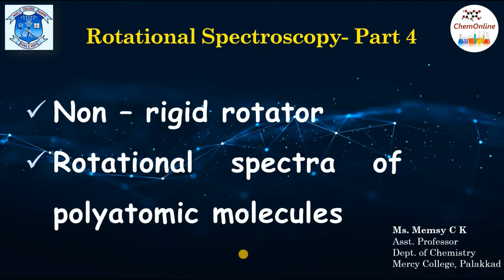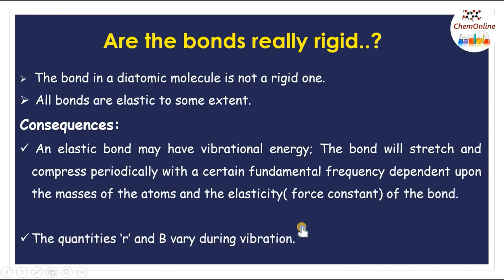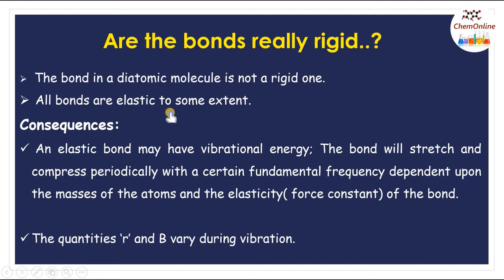In this class, we will discuss the non-rigid rotator model and the rotational spectra of polyatomic molecules. While solving the Schrödinger wave equation for a rotating diatomic molecule and deriving the energy, we had assumed that a rotating molecule is a rigid rotator — that is, the bond length is fixed. But in reality, the bonds in a diatomic molecule are not rigid; in fact, all bonds are elastic to some extent. Let's see what the consequences of this elasticity are.